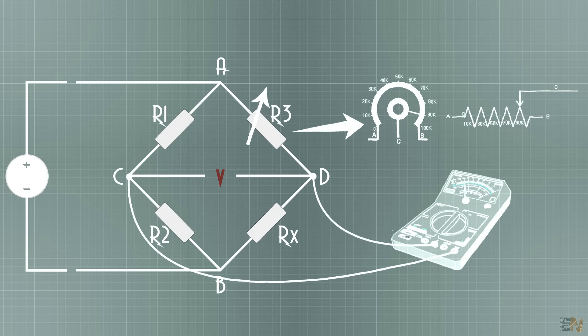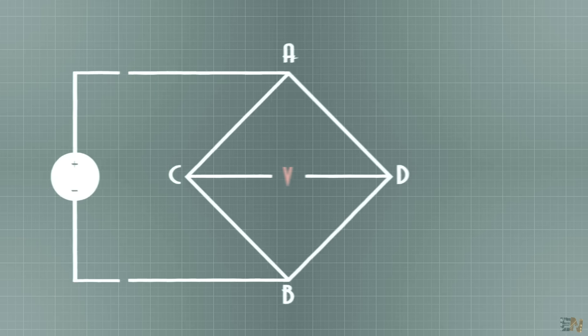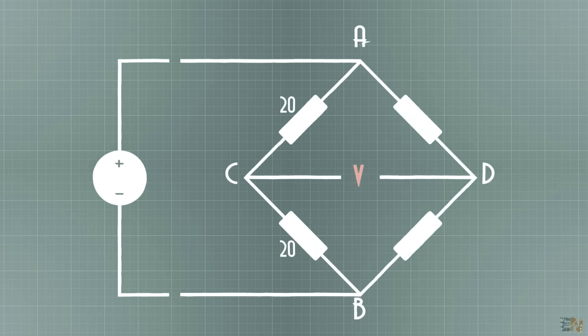But now let's give some values. On one side we have let's say two resistors of 20 ohms and the supply is 10 volts. Using the divider formula before, we get that the voltage on C is 5 volts. We change the R3 resistance till we get 5 volts as well on point D.